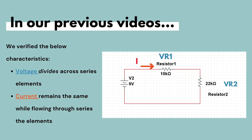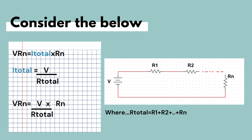In our last two videos prior to this two-part video, we verified that voltage divides in elements connected in series and that current remains the same while flowing through series elements. Now, let's consider the circuit with multiple elements in series — more precisely, an N number of resistors connected in series with the power supply. Say we'd like to find the voltage across resistor N. To do so, we must use Ohm's law. Therefore, we can say that VrN, the voltage on resistor N, is equal to I total — the current flowing through all the resistors — times RN. Where I total is equal to the voltage of the power supply over the total series resistance.